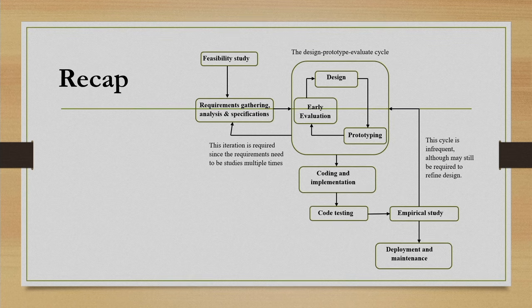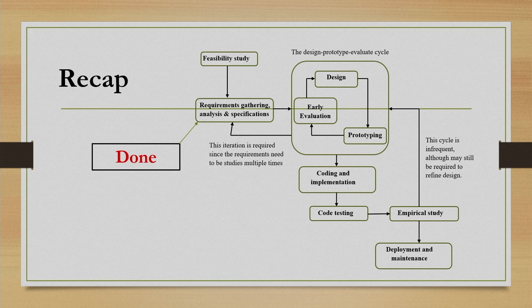We are discussing the interactive system development life cycle. Human computer interfaces are interactive systems, and when we develop them we follow a particular stage-wise approach called the interactive system development life cycle. It contains several stages, each producing some outcome document. We have covered so far most of the stages, including the requirement gathering, analysis and specification stage, where we capture and analyze end-user requirements from the point of view of usability. The outcome of this stage is the SRS, or Software Requirement Specification.